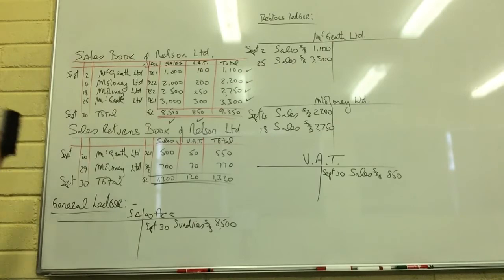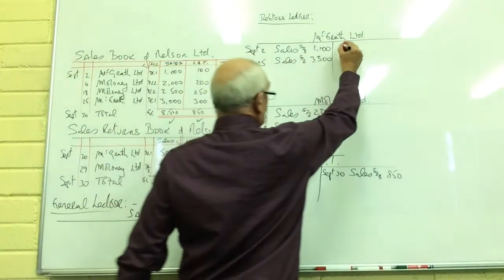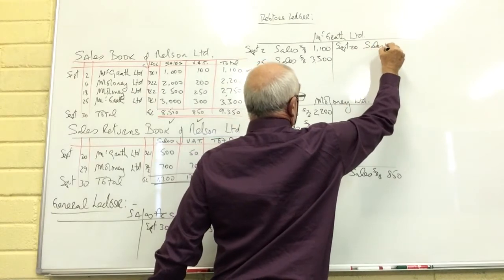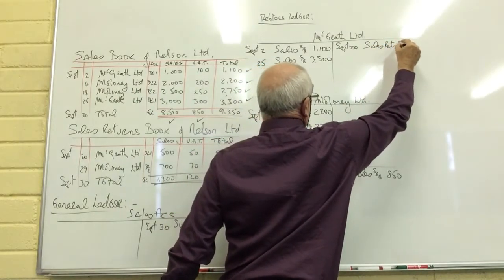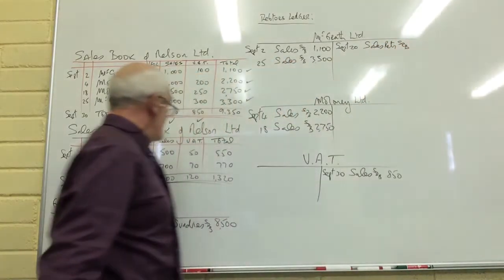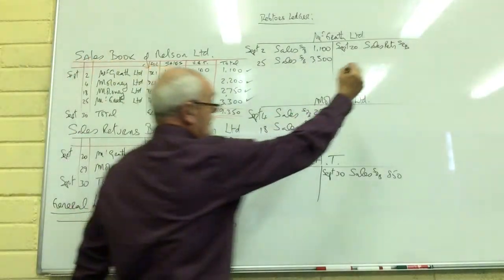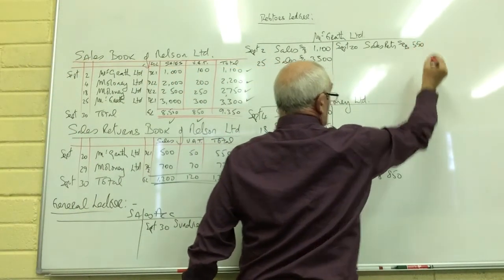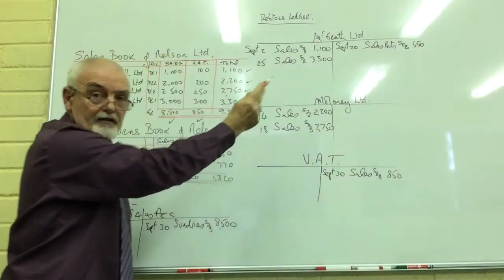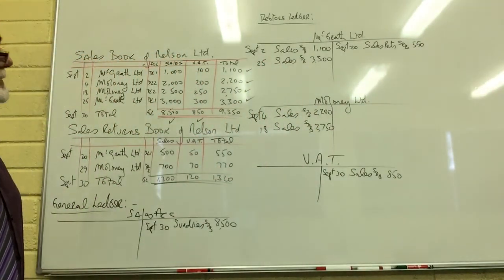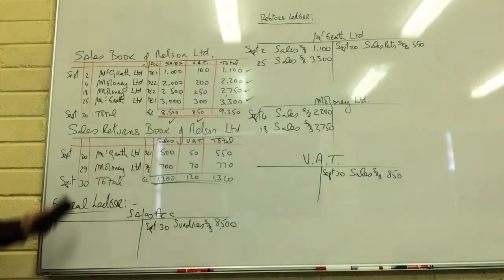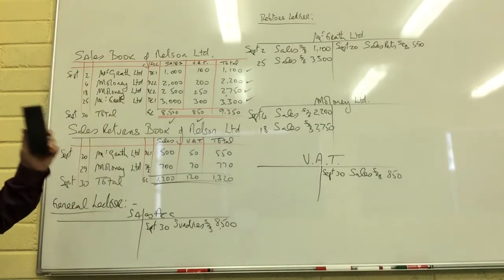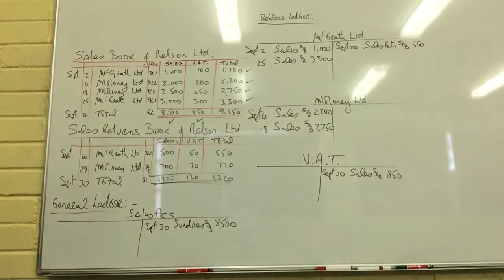McGrath and Maloney sent us back goods, so we're going to credit them because they're giving — credit the giver. I go to McGrath's account, September 20th, and write 'sales returns,' getting this from the sales returns book. The value of the credit note is €550. You can see here why it's called a credit note — we have credited McGrath's account. We give McGrath a credit note to tell them we're going to credit their account, which reduces the amount they owe us.